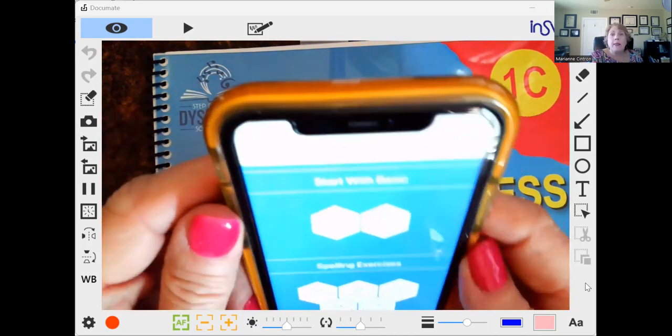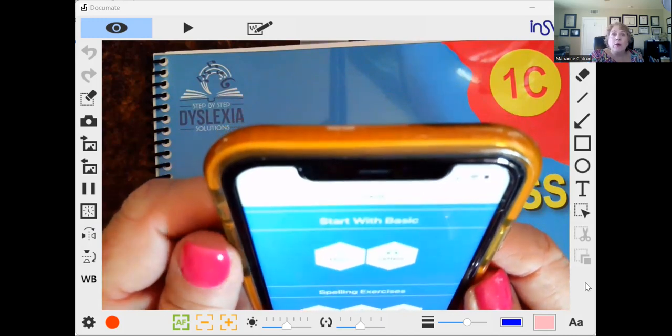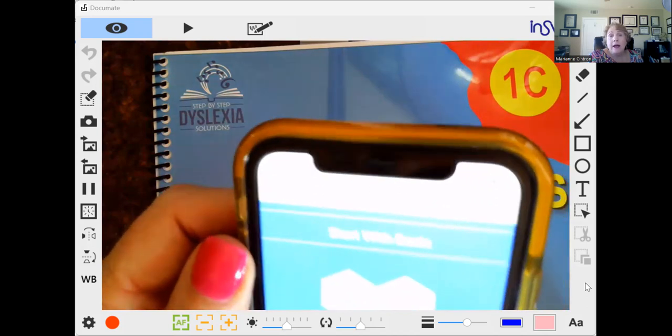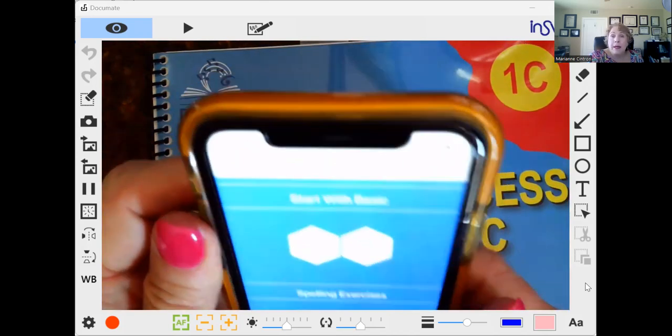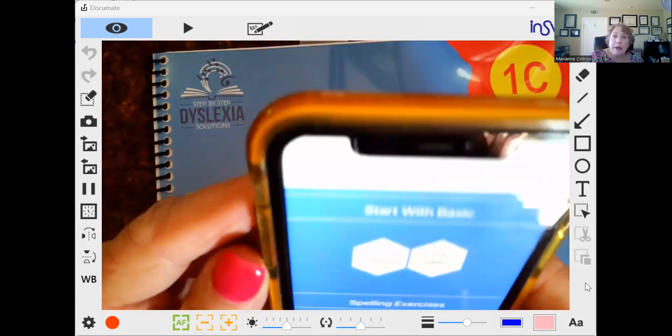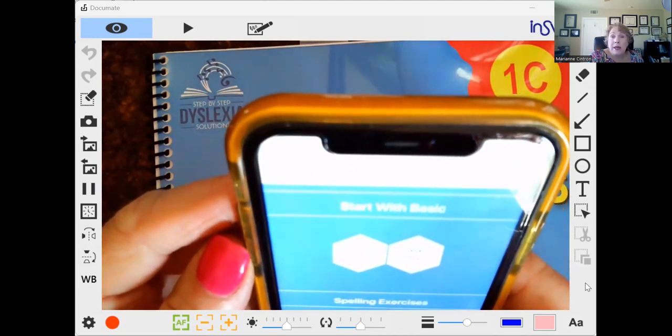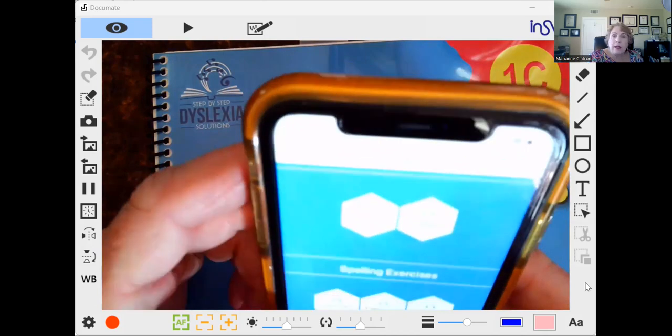And because we want kids using all their senses, if you have them repeat after I say A, I'll say A, A, B, B. You could have them repeat that before they or as they write it. And then they'll say B and they'll write it. That's going to help their brain.